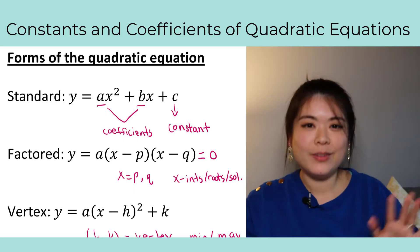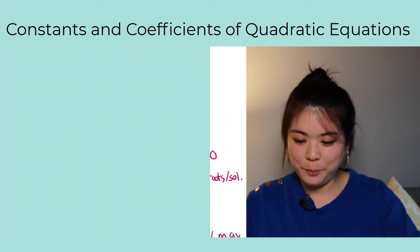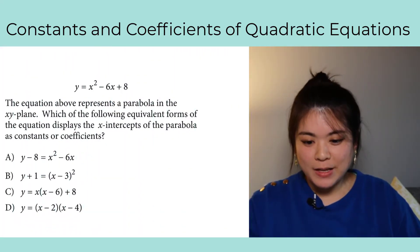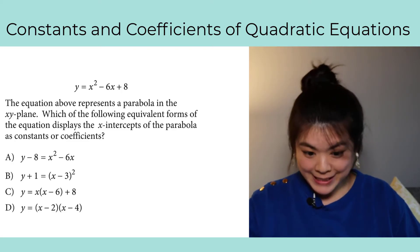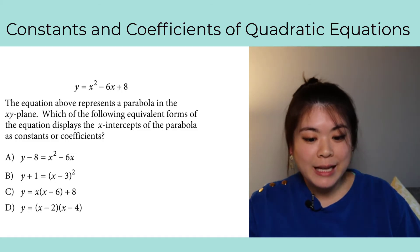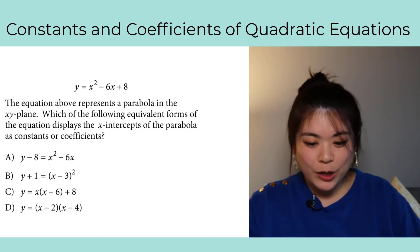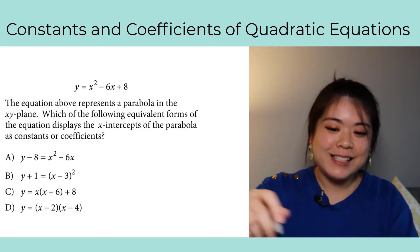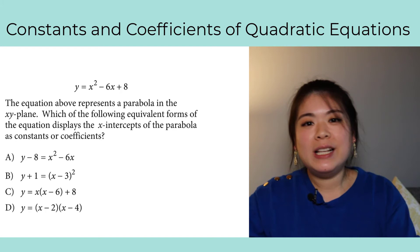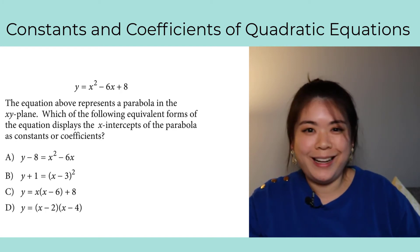All right, so with that foundation set, let's now get into the actual examples. Here is the first question: y equals x squared minus 6x plus 8. And the question reads, the equation above represents a parabola in the xy-plane. Which of the following equivalent forms of the equation displays the x-intercepts of the parabola as constants or coefficients?